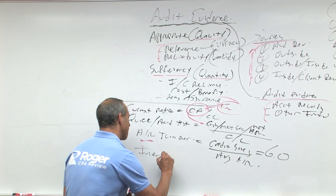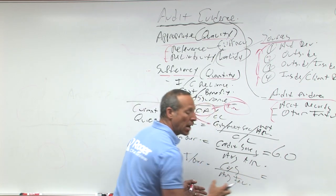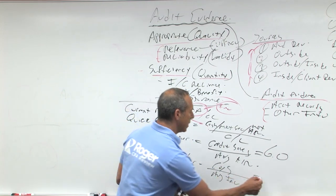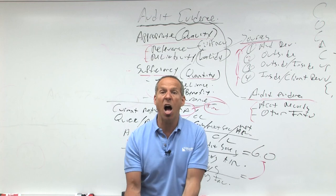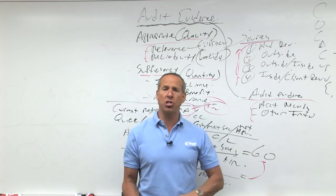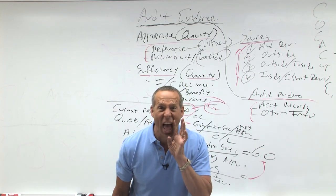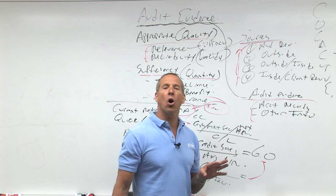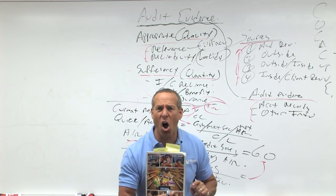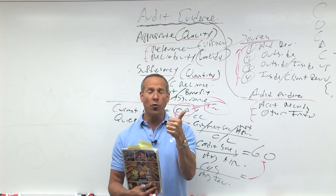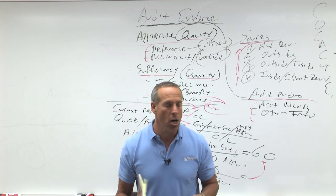Inventory turnover — flip it — cost of goods sold over average inventory. Let's say 6.0, meaning inventory turns over six times a year or every two months. If you're evaluating a balance sheet and there's inventory that's three months old, maybe it's obsolete and needs an adjustment. For example, if my inventory is milk and it's six months old, it's not saleable — there'd be an audit adjustment because inventory is overstated. Get into the mindset: the client wants to look bigger, better, stronger, so they overstate assets — overstate receivables, overstate inventory — when those assets aren't really collectible or saleable.